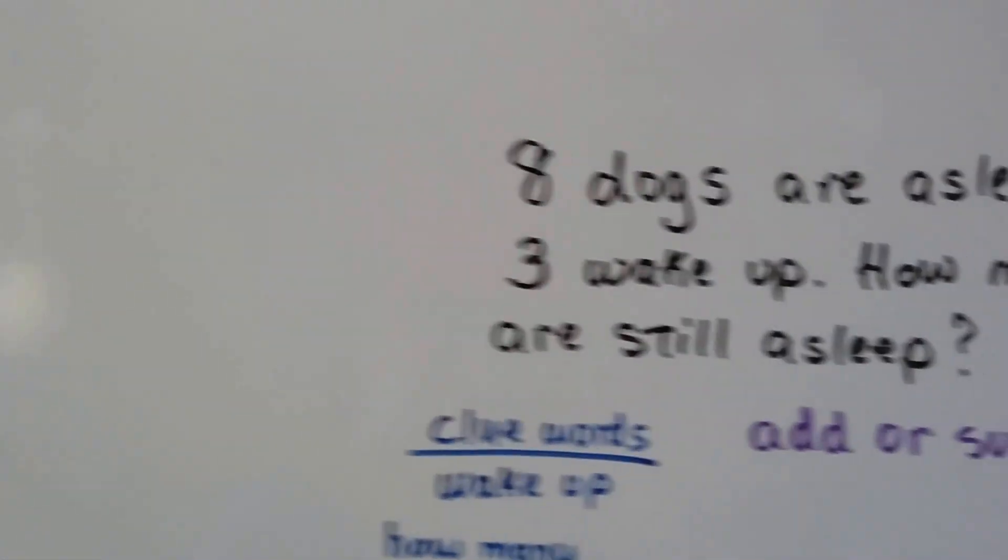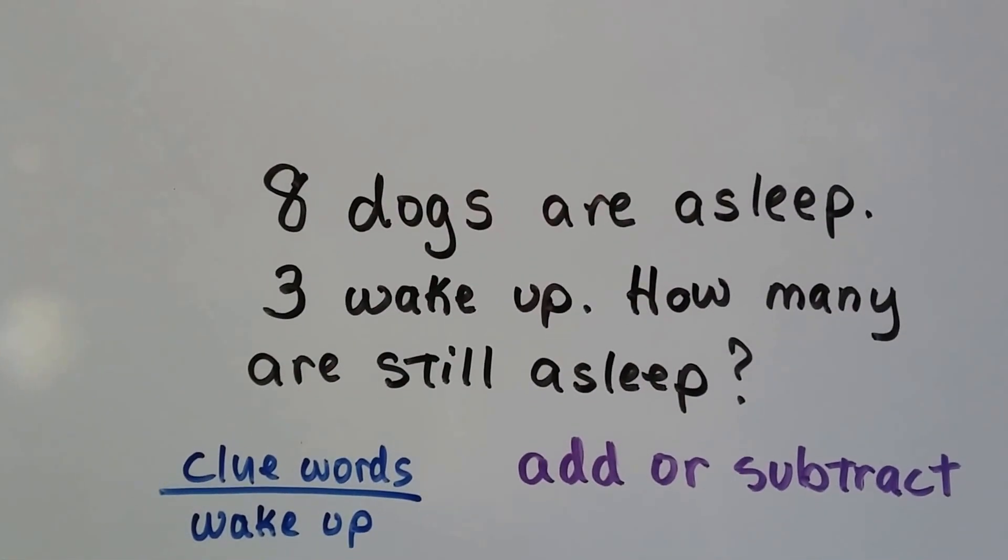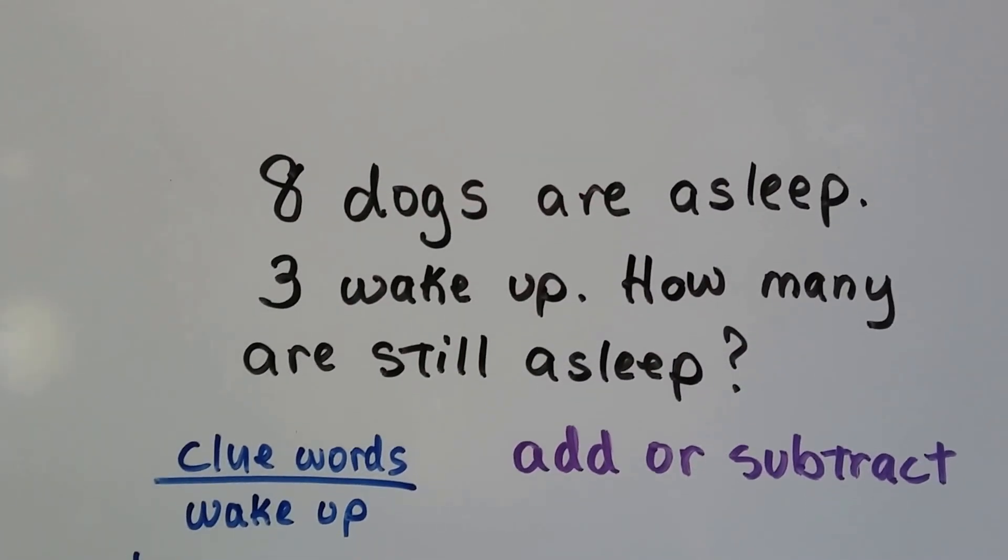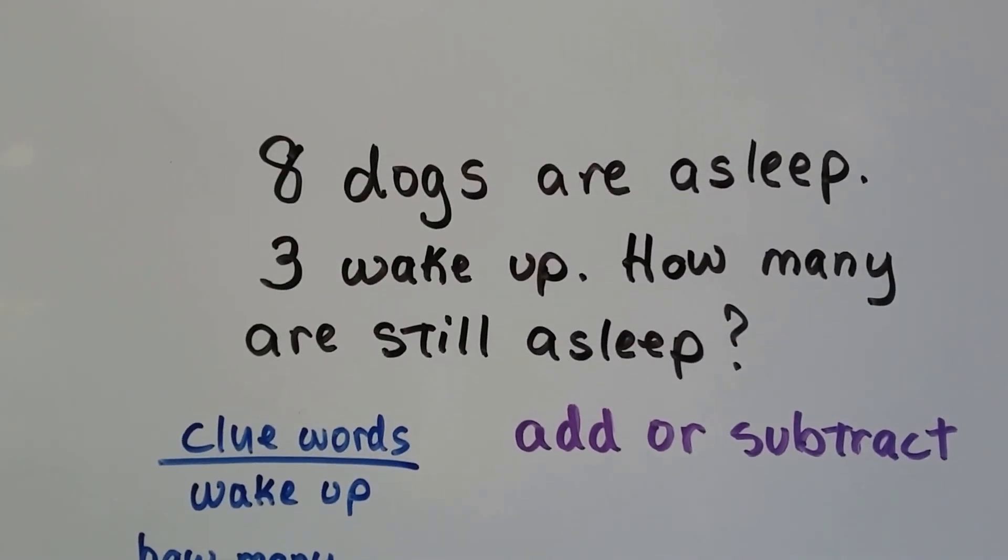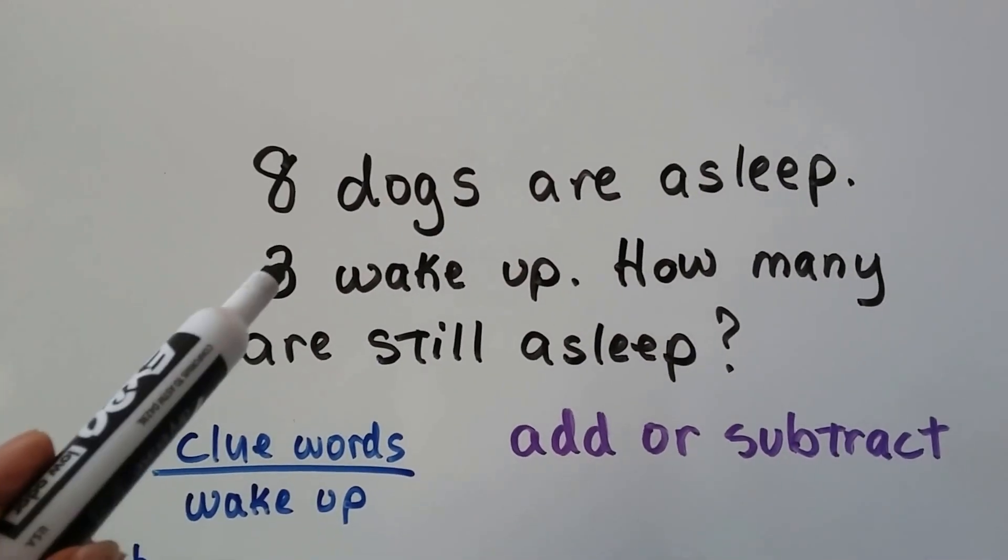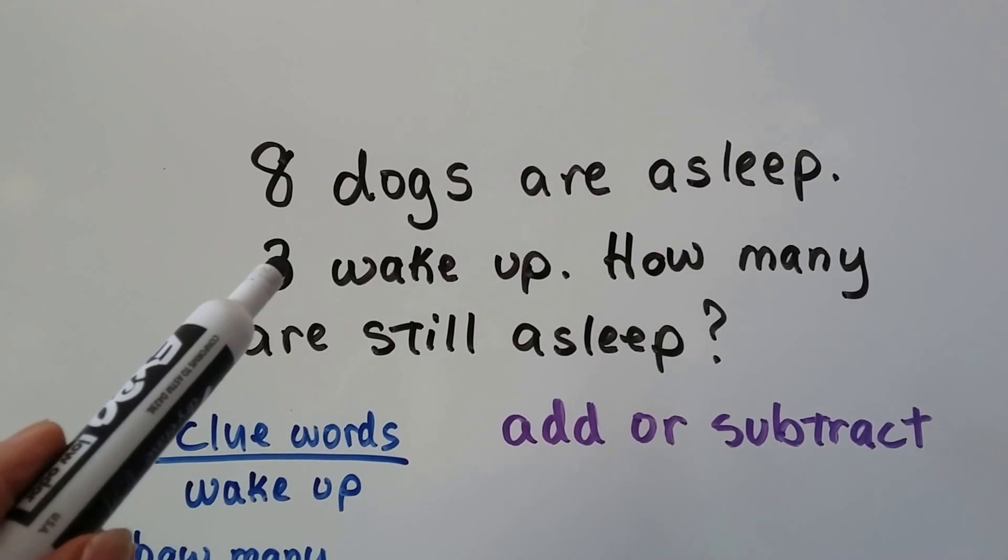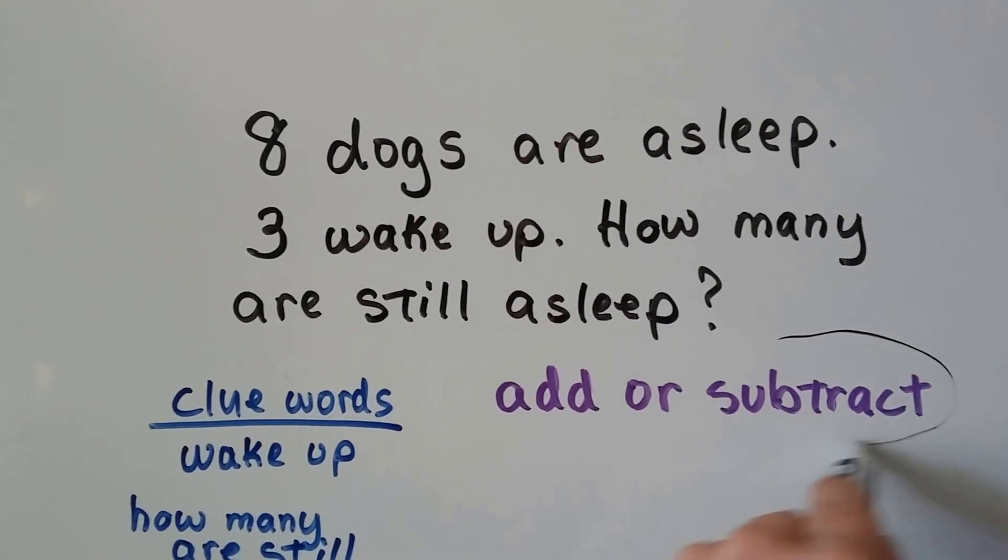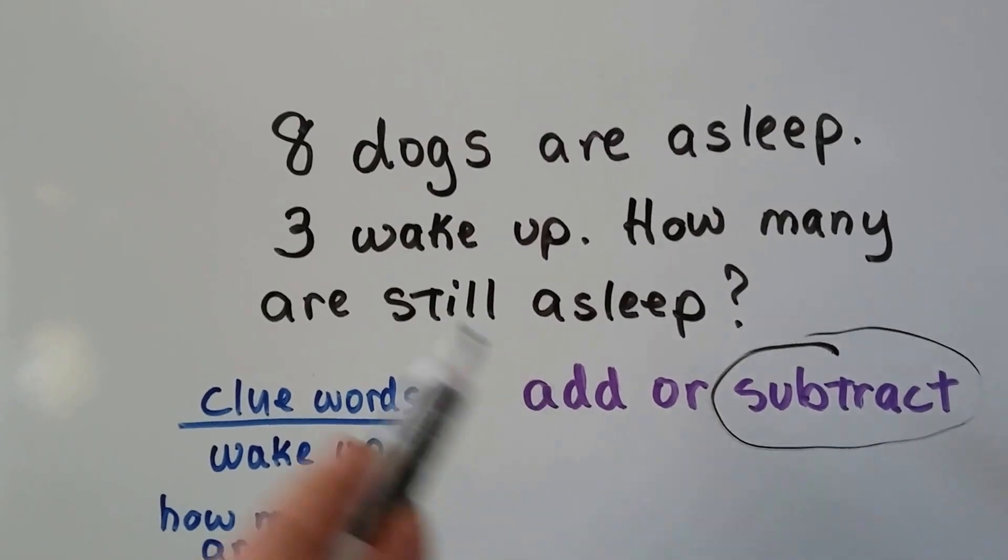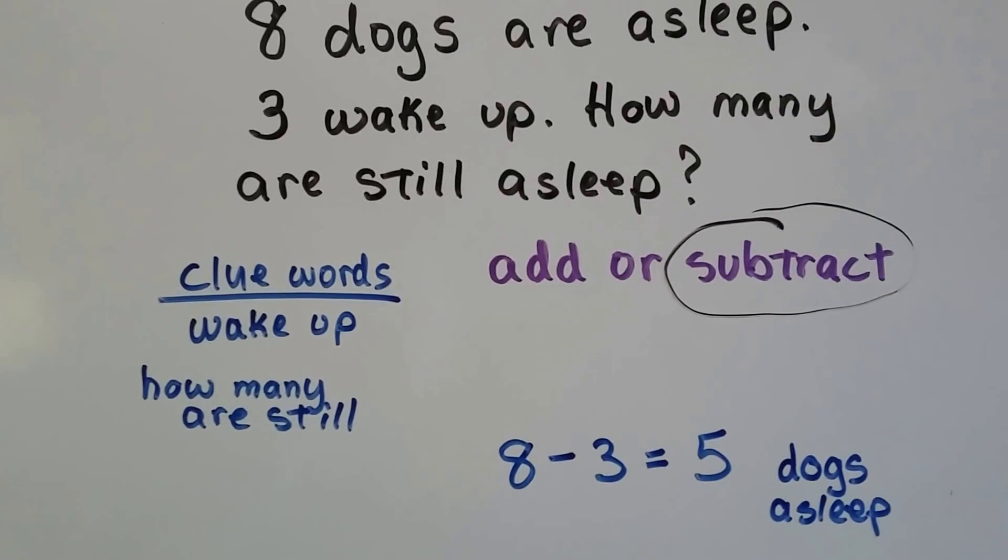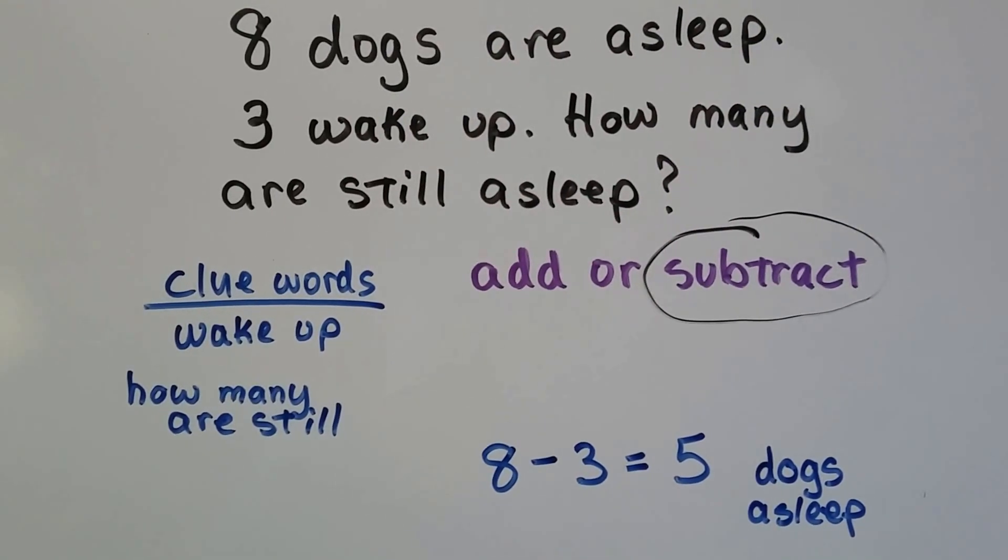Let's try another one. We have eight dogs are asleep. Three wake up. How many are still asleep? Our clue words are wake up and how many are still. So it says that eight were asleep but three wake up. This is a subtraction sentence. We need to subtract the three that woke up from the eight.